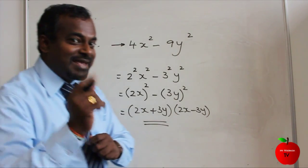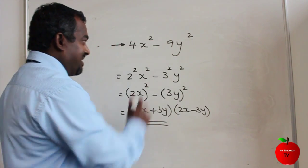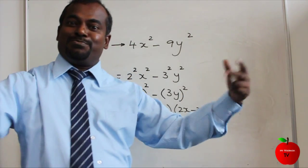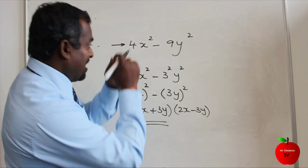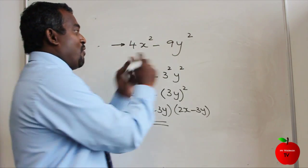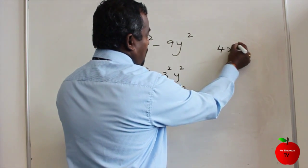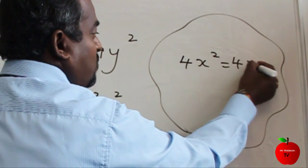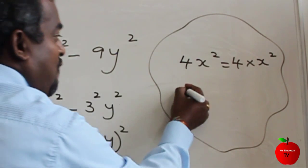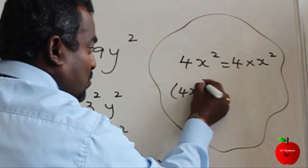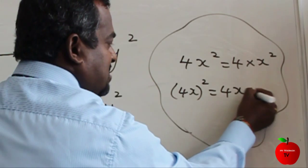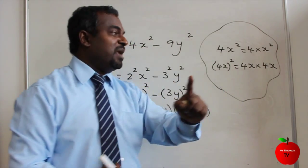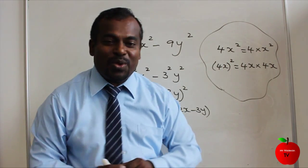A common mistake here is writing 4x minus 9y and 4x plus 9y as the factors. You must be careful about the difference between 4x squared and 4x all squared: 4x squared means 4 times x squared, whereas 4x all squared means 4x times 4x. Make sure you understand that difference.